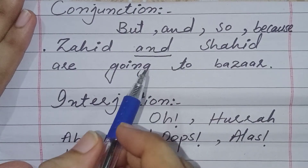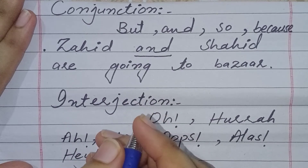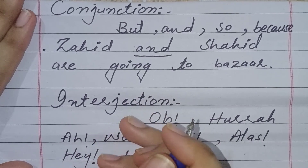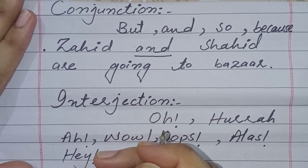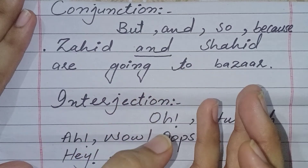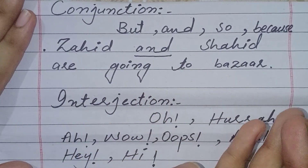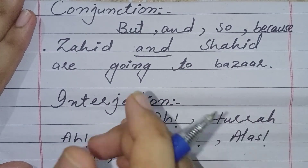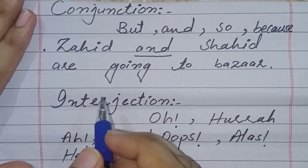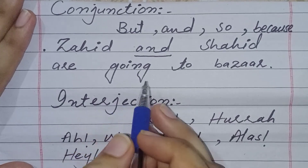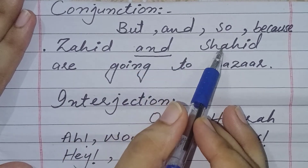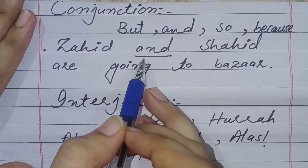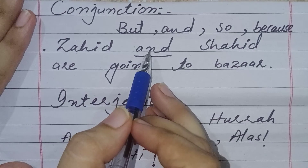Now we will talk about the seventh part of speech: conjunction. A conjunction is a word which is used to connect words, phrases, or sentences together — like either, and, but, or, because. For example, in 'Zahid and Shahid are going to the bazaar,' the word 'and' is used to join two nouns, so it works as a conjunction.